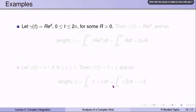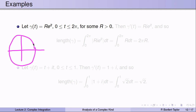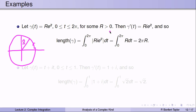Let's look at some examples. For gamma(t) = r·e^(it), t from 0 to 2π — a circle of radius r — gamma prime(t) = r·i·e^(it). The length equals the integral from 0 to 2π of |r·i·e^(it)| dt. Since |e^(it)| = 1 and |i| = 1, the absolute value of gamma prime is simply r. Integrating r from 0 to 2π gives 2πr, confirming the circumference of a circle of radius r is 2πr.